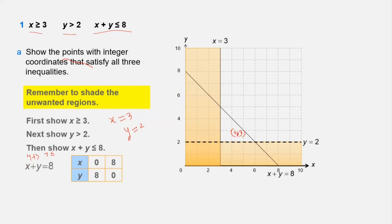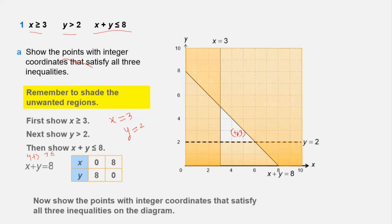We have now plotted all three inequalities and shaded the unwanted regions. Next, we show the points with integer coordinates that satisfy all three inequalities. For example, (3, 5): 3 + 5 = 8 ≤ 8 ✓. And (3, 4): 3 + 4 = 7 ≤ 8 ✓. These are the points that satisfy all the inequalities.